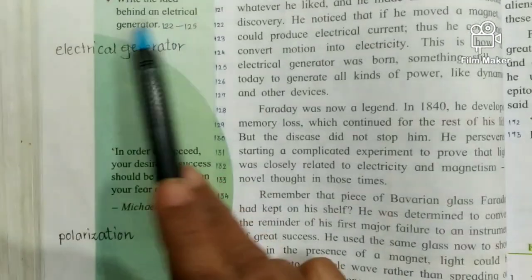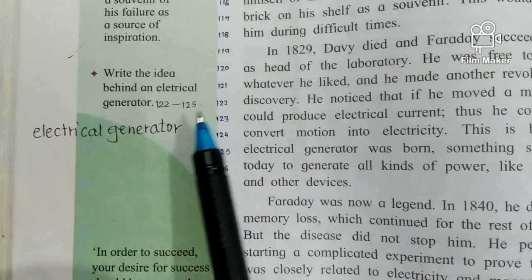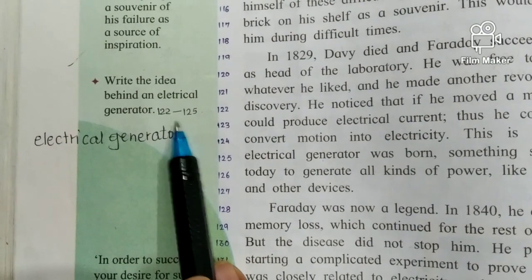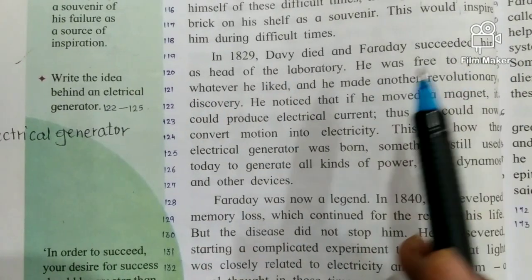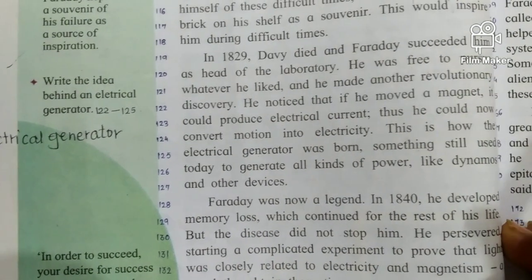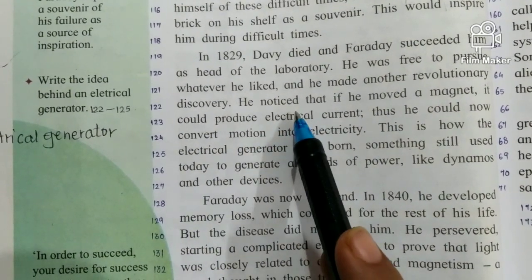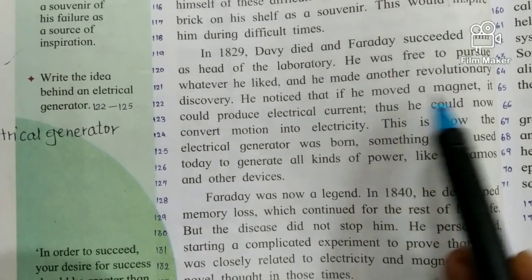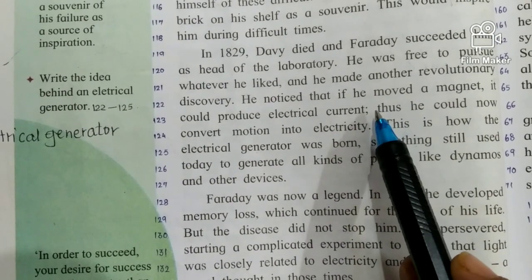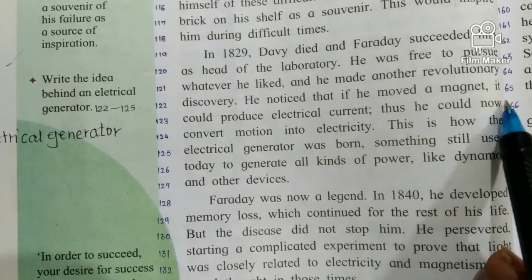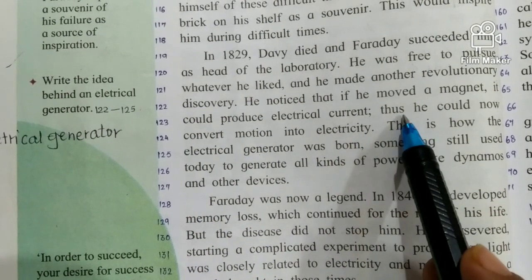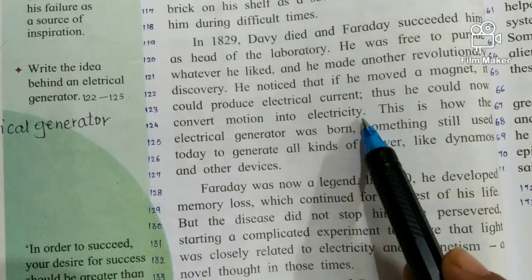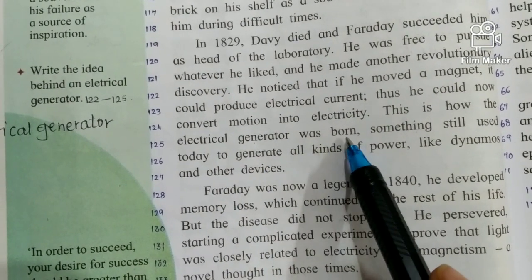The next question: write the idea behind the electric generator. The answer is in lines 122 to 125. Faraday noticed that if we move a magnet, it could produce an electric current. Thus it could convert motion into electricity, and this is how the electric generator was born.